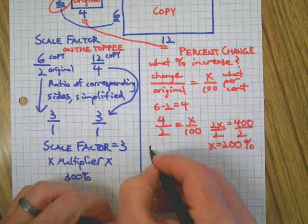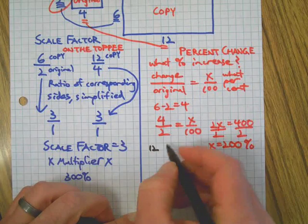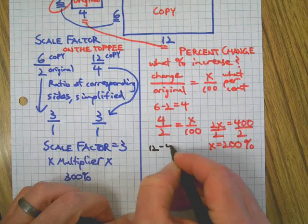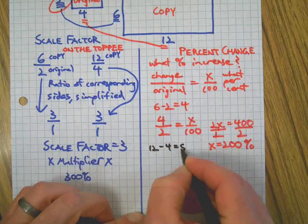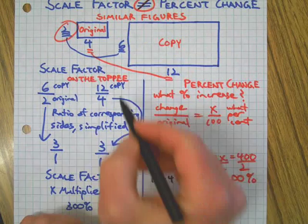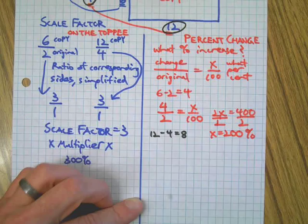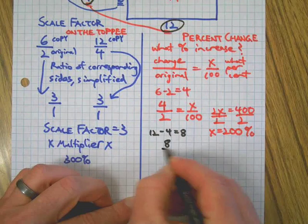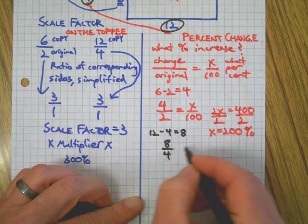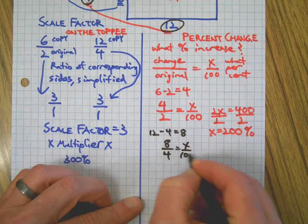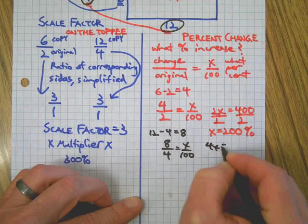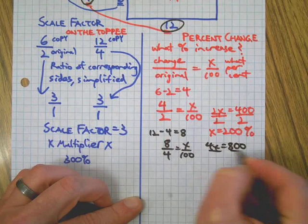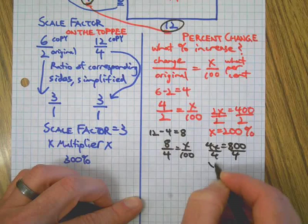We take 12 over 4, which is 8. That's the change in these two corresponding sides. Okay, the change over the original, there, which was 4. In this case we have 4x equals 800, and you can see how that's going to work out to be the same thing.